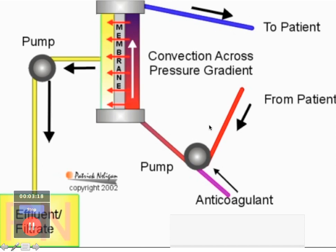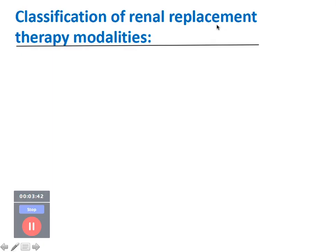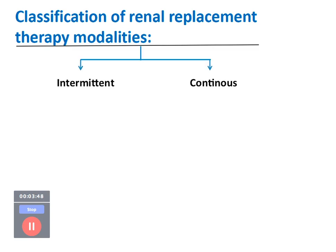Looking at the schematic diagram: blood from the patient is pumped into the dialysis filter. Inside the filter, there is counter-current flow of dialysate fluid, and diffusion and convection occur as required. In ultrafiltration, the filtered fluid comes out as effluent or filtrate, and the purified blood returns to the patient.